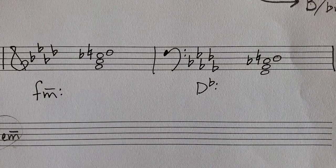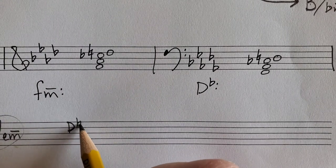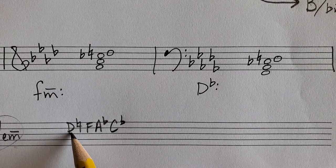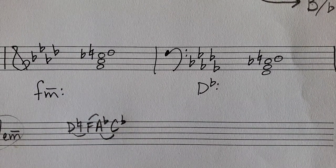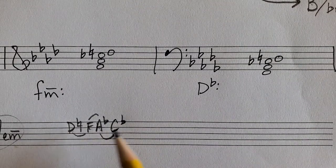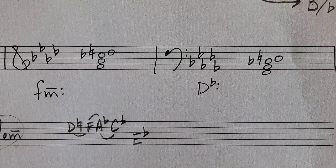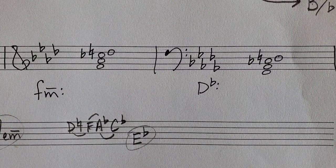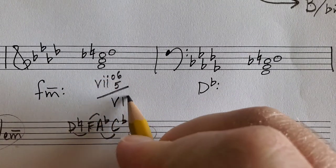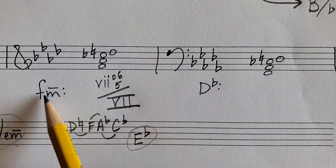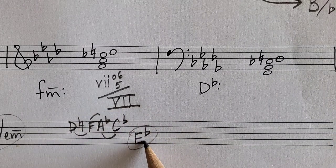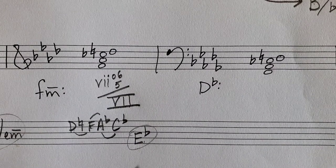Next one in F minor: the root is D natural, giving us D natural, F, A-flat, C-flat. The chord quality is fully diminished — all minor thirds. D natural is the leading tone to E-flat. In the key of F minor, E-flat is VII. It's in first inversion. Remember you can only tonicize major VII in a minor key — that's the subtonic chord spelled on E-flat, a whole step below the tonic, not a half step.